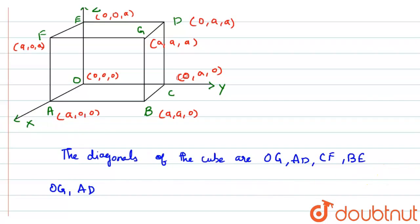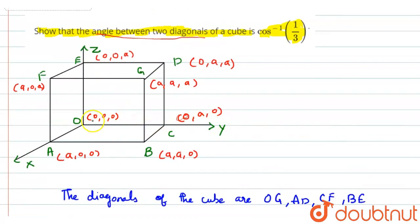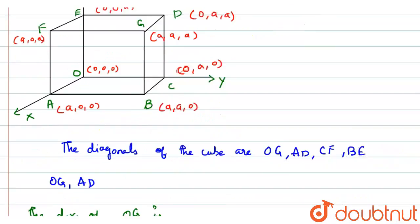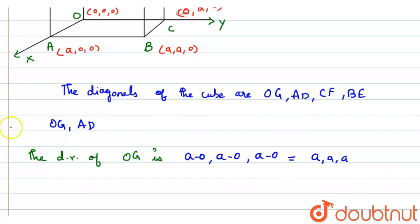To find the angle between them, first let us find the direction ratios of OG and AD. The direction ratio of OG is G minus O. G contains (a, a, a) and O contains (0, 0, 0). So it will be (a−0, a−0, a−0) = (a, a, a), which is the direction ratio of OG.